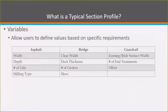A unique functionality of typical section profiles is what are called variables. Variables allow the user to define the values based on the specific requirements for the project. This helps keep the typical section profiles dynamic so that they can be used on a wide variety of projects. For an asphalt profile, the user can modify the roadway width, the depth, the number of lifts, and even the milling type.